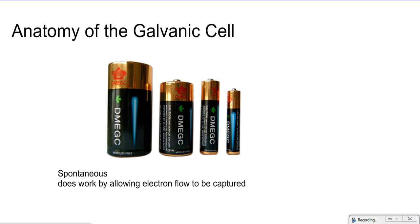This means they proceed on their own without any external power source. Batteries also allow us to do work, either produce heat or to power a light bulb by allowing us to capture the electron flow from one species to another.